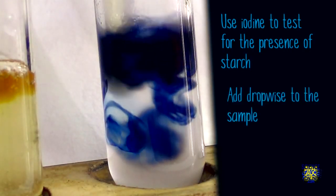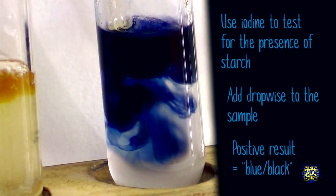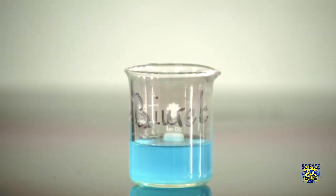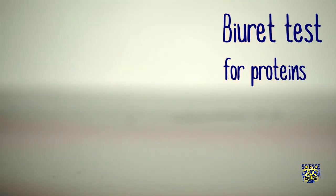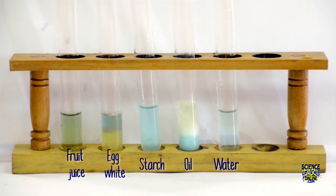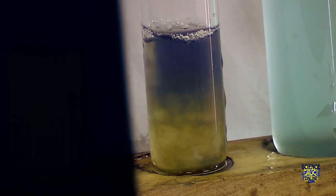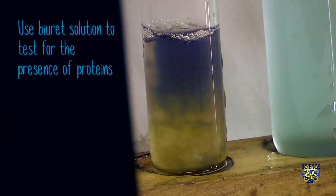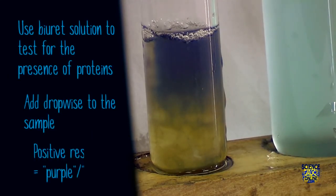You add iodine drop-wise to each of your samples, and it turns blue-black if starch is present. Next, let's look at the biuret test for the presence of proteins. Take your biuret solution and add drop-wise to each of the samples. If we give it some time for the reaction to take place, we can see in the egg white it turns a purplish violet color, suggesting that protein is present. Use biuret solution to test for proteins - it will turn purple or lilac if protein is present.